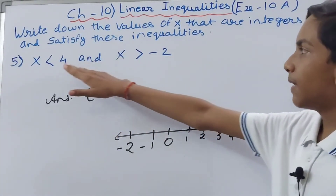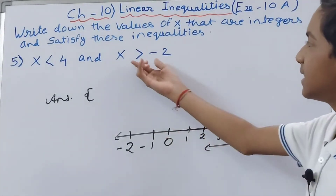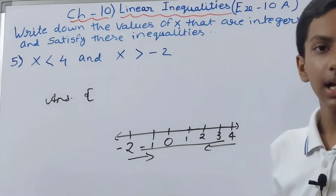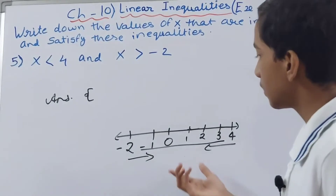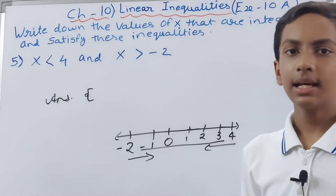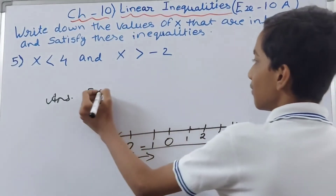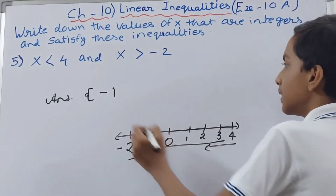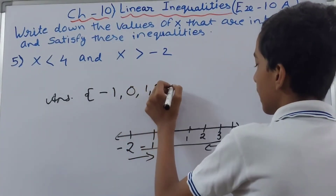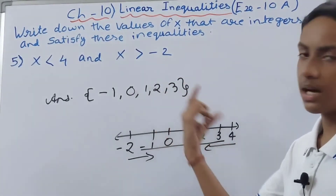X has to be less than 4, so it goes toward the left, and greater than minus 2, so the numbers between these two will be our solution set. Starting from the smallest number: -1, 0, 1, 2, 3, and then close the set. The answer is {-1, 0, 1, 2, 3}.